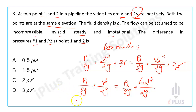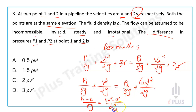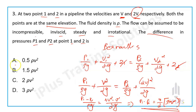Rearranging: P1 minus P2 by rho g equals 4V squared minus V squared divided by 2g. That gives 3V squared by 2g. So P1 minus P2 equals 3 by 2 times rho V squared, which is 1.5 rho V squared. Therefore the answer is option B: 1.5 rho V squared.